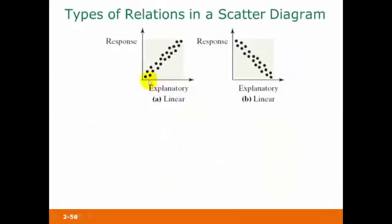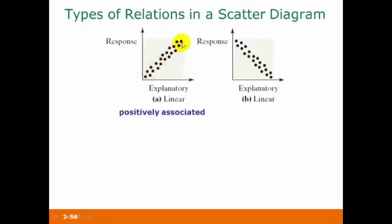In this first picture on the left, we would say that this scatterplot shows a linear relationship. A linear relationship basically means that we can see some type of a straight line pattern. This would be positively associated because as our explanatory variable increases, our response variable also increases — in other words, our straight line pattern is going up as you go from left to right.